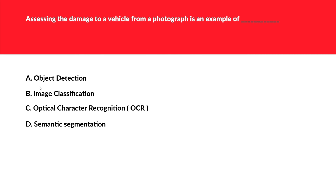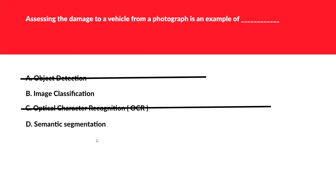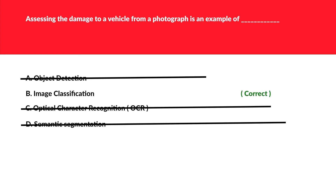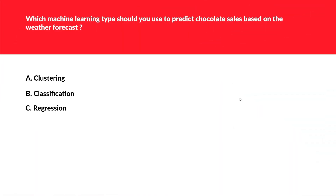This question is related to damage assessment of vehicles, as in insurance companies. Object detection — remember, whenever you see 'bounding box' in the question, object detection fits, but the question doesn't mention that. Image classification can assess the level of damage, so this fits. OCR can read number plates but cannot assess damage levels. Semantic segmentation fits when pixels are mentioned in the question, but nothing like that appears here. We are left with image classification as the correct option.